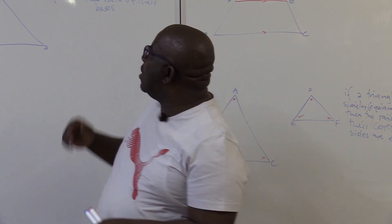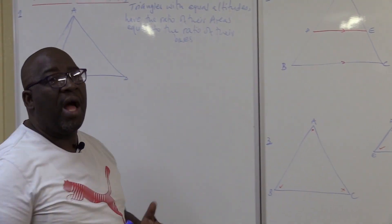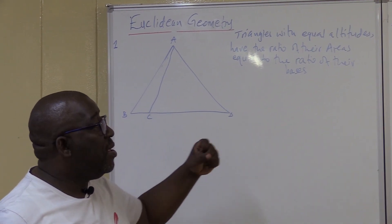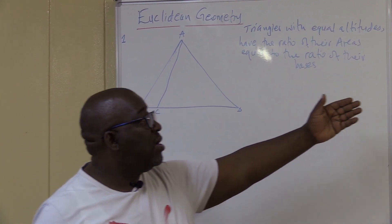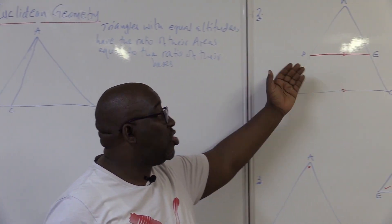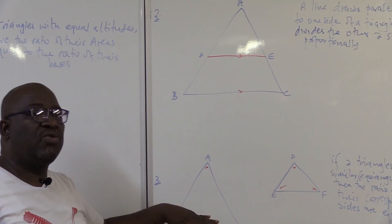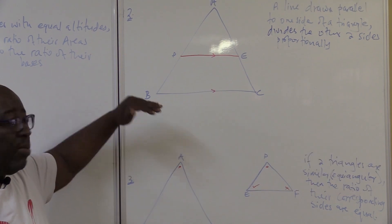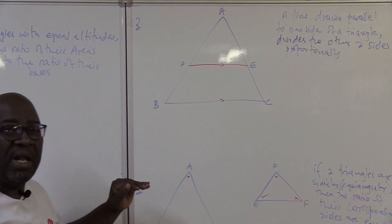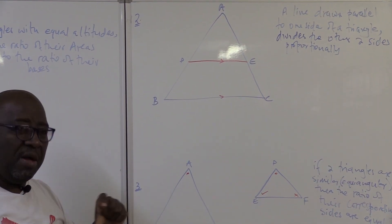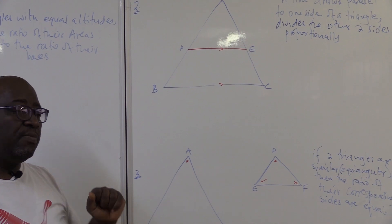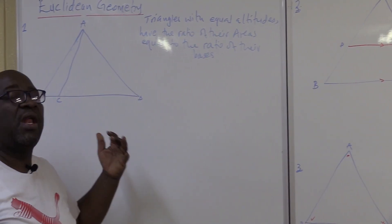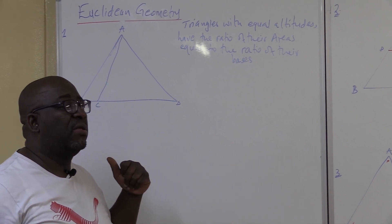The first theorem I call the equal altitudes theorem. The second one is called the proportionality theorem, and the last one is called the similarity theorem. The proportionality theorem and the similarity theorem — their proof is required in the examination. The equal altitudes theorem you apply; you don't necessarily have to prove it in the examination.